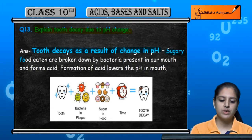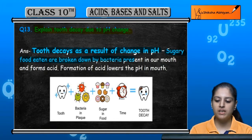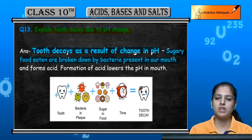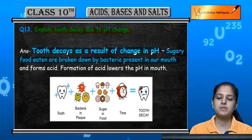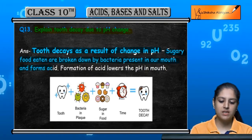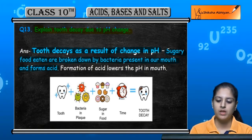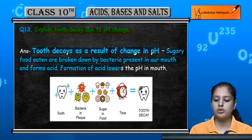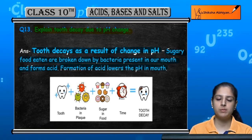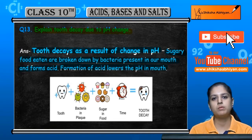If we eat more sugary food, bacteria present in our mouth breaks it down into smaller, simpler substances. When it breaks down, acid is formed. When acid forms, our mouth's pH will reduce because acid has a lower pH.